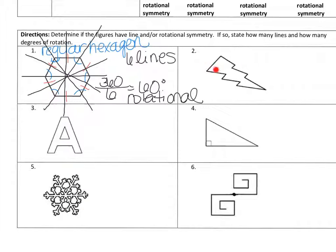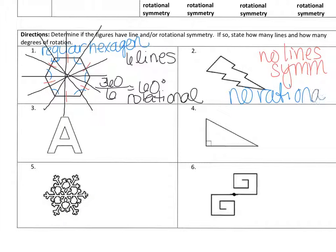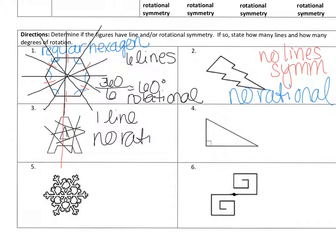Looking at the lightning bolt, we can't split it symmetrically, so there are no lines of symmetry. If we try to turn it, it will only look like itself after going all the way around — so it also has no rotational symmetry. The capital letter A can be split right down the middle since it is exactly the same on the left and right, giving one line of symmetry. But if we try to rotate it, it will take all 360 degrees to look the same, so no rotational symmetry.